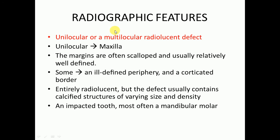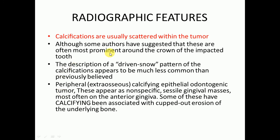Now we'll discuss about radiographic features. It may show unilocular or multilocular radiolucent defect. The unilocular defect is most commonly present in the maxilla. The margins are often scalloped and usually relatively well defined, though some may show an ill-defined periphery and a corticated border. The defects usually contain calcified structures of varying size and density. An impacted tooth, most commonly the mandibular molar, is associated with these tumors.